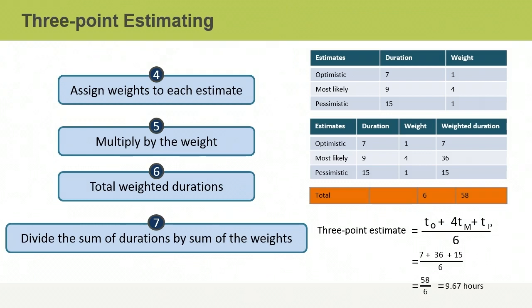The fourth step is to assign weights to the estimates. You need to assign weights that reflect the probability that each estimate will turn out to be accurate. If you're using a beta distribution formula, you assign a weight of 4 to the most likely estimate and weights of 1 to the other estimates. A weight of 4 means it's 4 times as likely to happen as an estimate with a weight of 1.